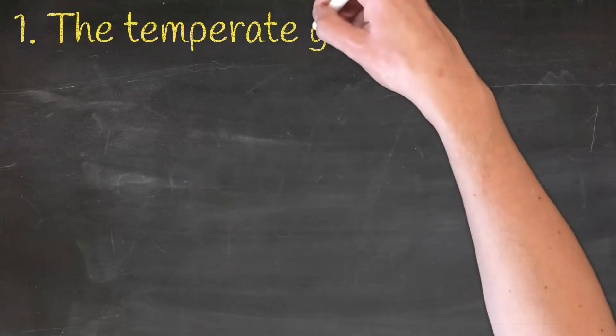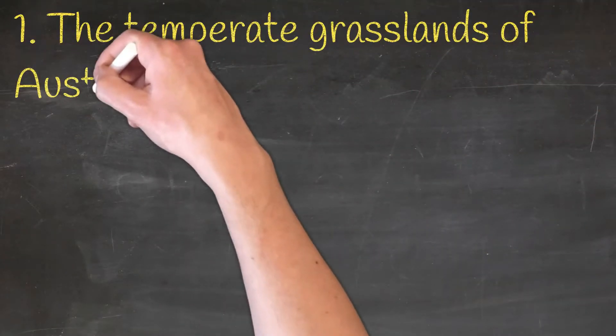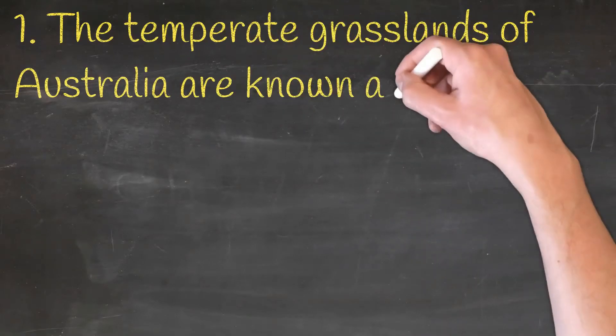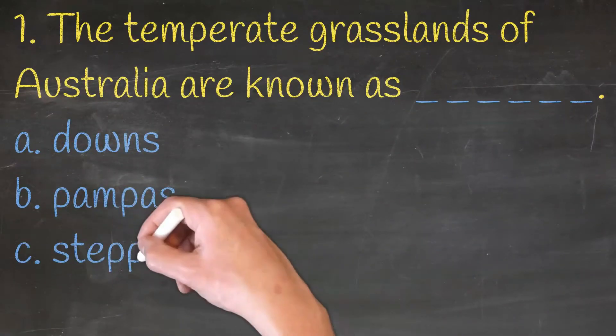The temperate grasslands of Australia are known as dash, downs, pampas, steppes or veld.